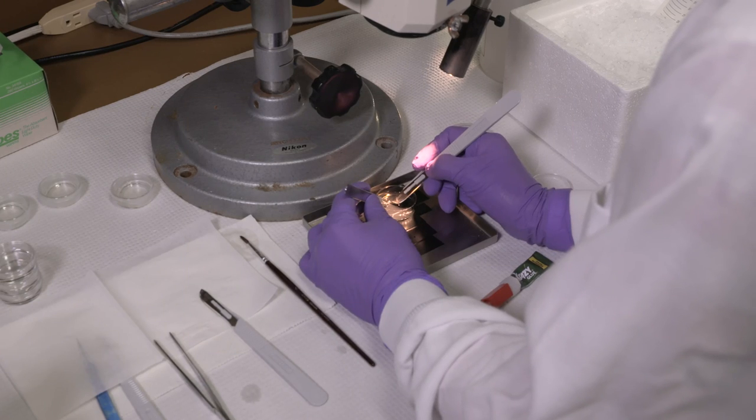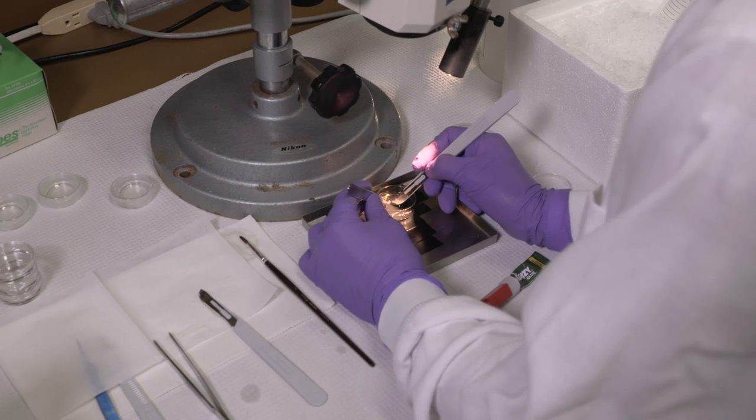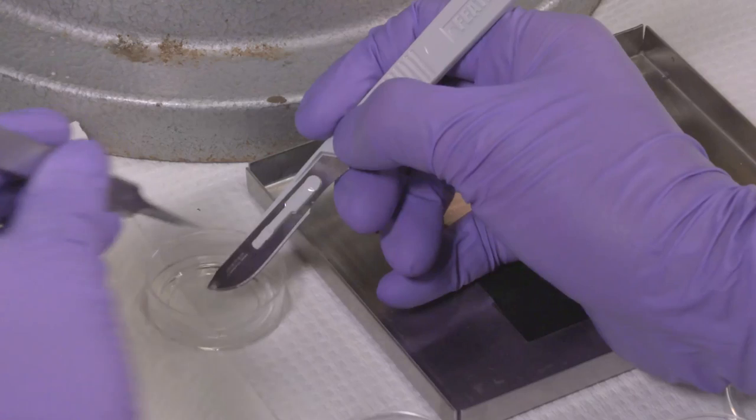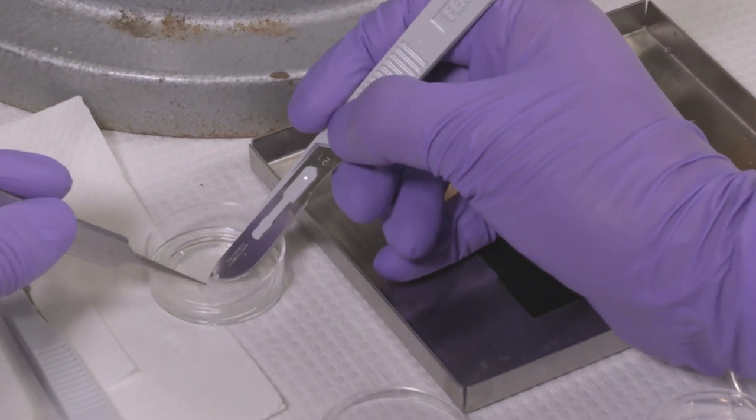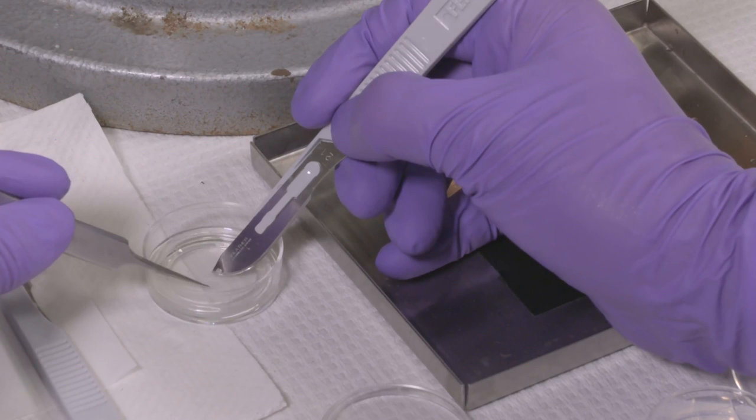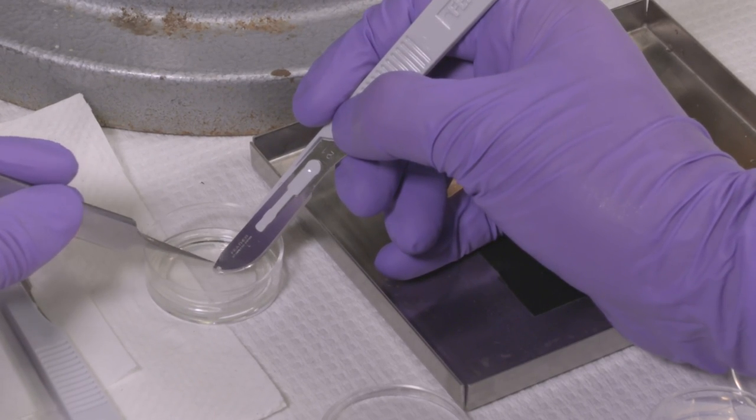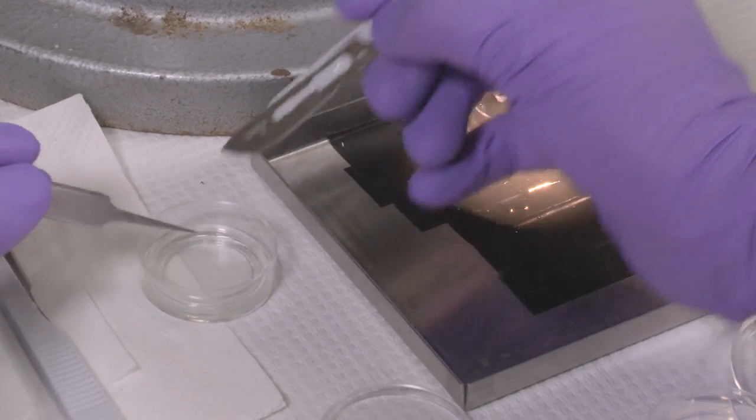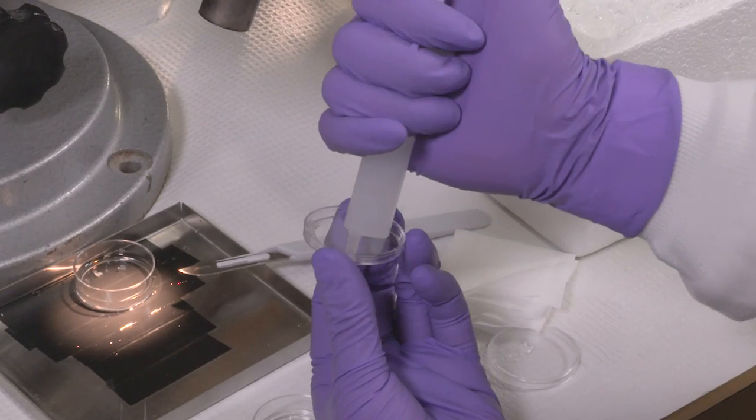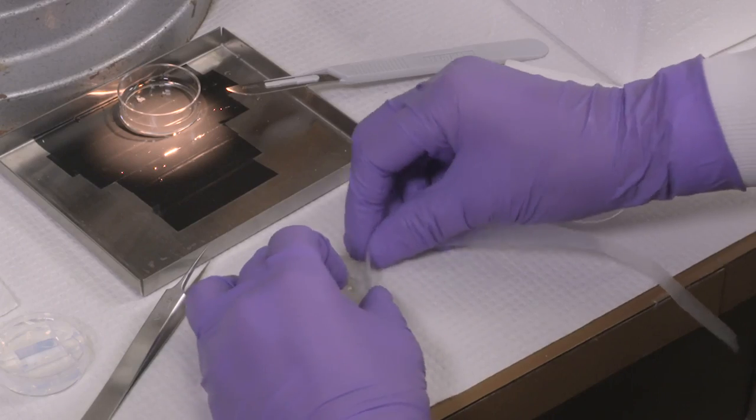The optic chiasm and SCN are trimmed with knives. The SCN slice is transferred onto a culture insert in a sterile petri dish with medium that contains luciferin. We seal the plane with grease and a parafilm.